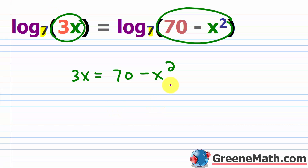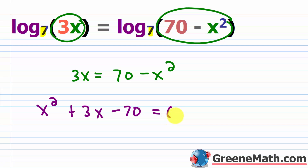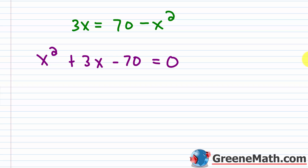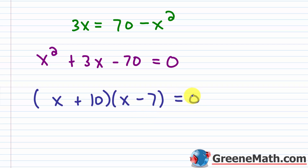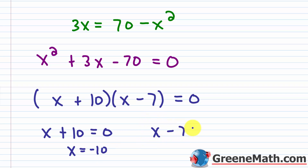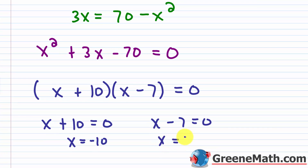To make this simpler, I'm going to move everything to the left-hand side. Adding x squared to both sides gives x squared, then plus 3x, and subtracting 70 gives minus 70, and this equals 0. From this point, I can solve using factoring, the quadratic formula, or completing the square. I'm going to use factoring because it's usually the fastest. Factoring gives x plus 10 times x minus 7 equals 0. Setting each factor equal to 0: x plus 10 equals 0 gives x equals negative 10, and x minus 7 equals 0 gives x equals 7. So these are the two proposed solutions.